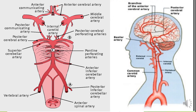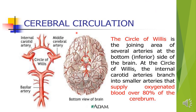The middle cerebral arteries on both sides are connected by an artery called the anterior communicating artery. The anterior circulation and posterior circulation are connected by the posterior communicating artery. This forms a circle called the circle of Willis.